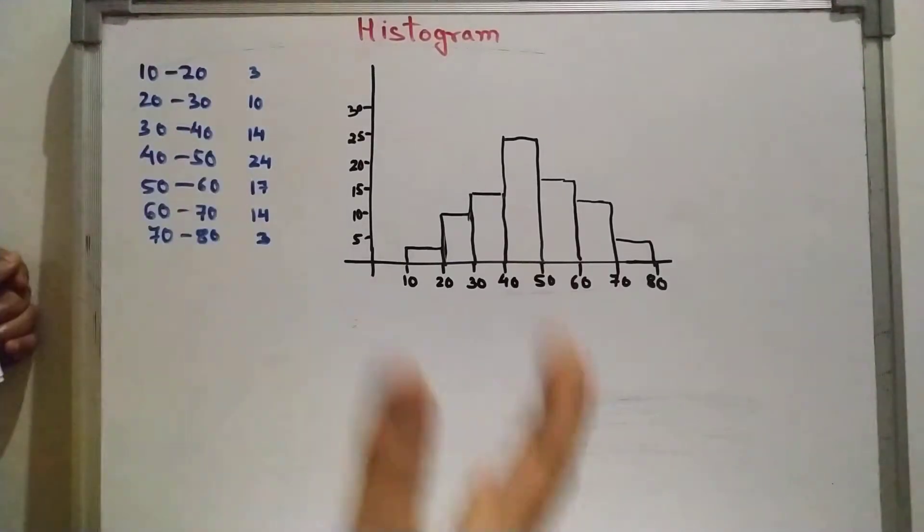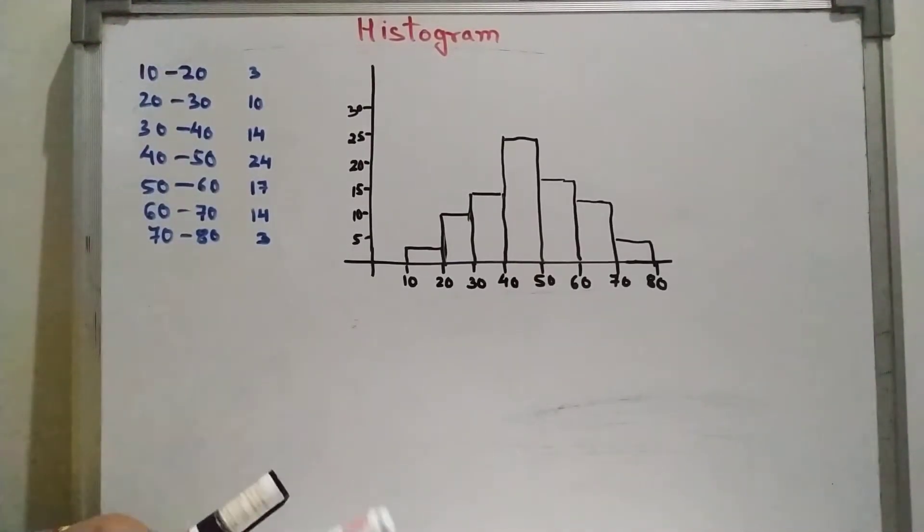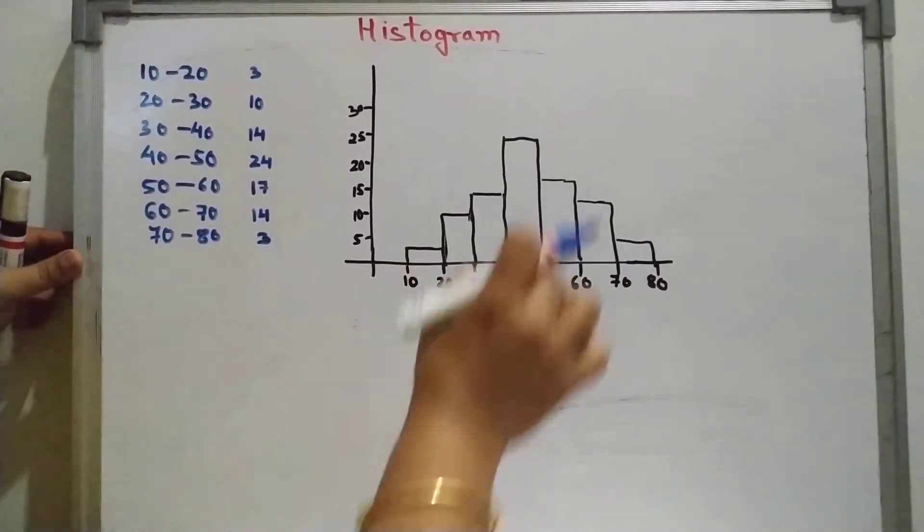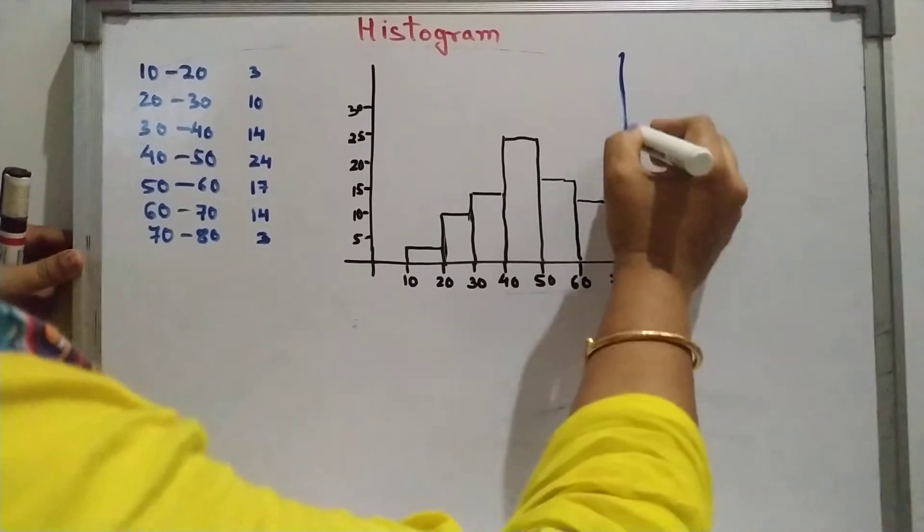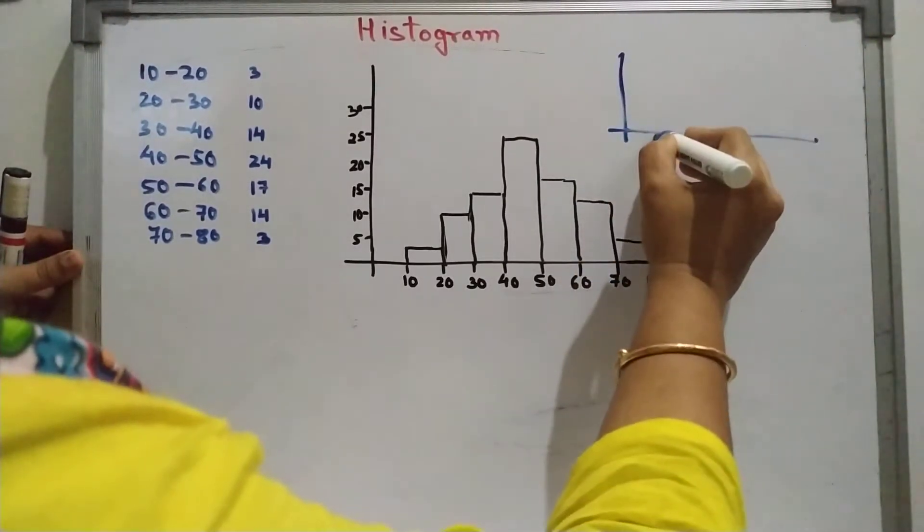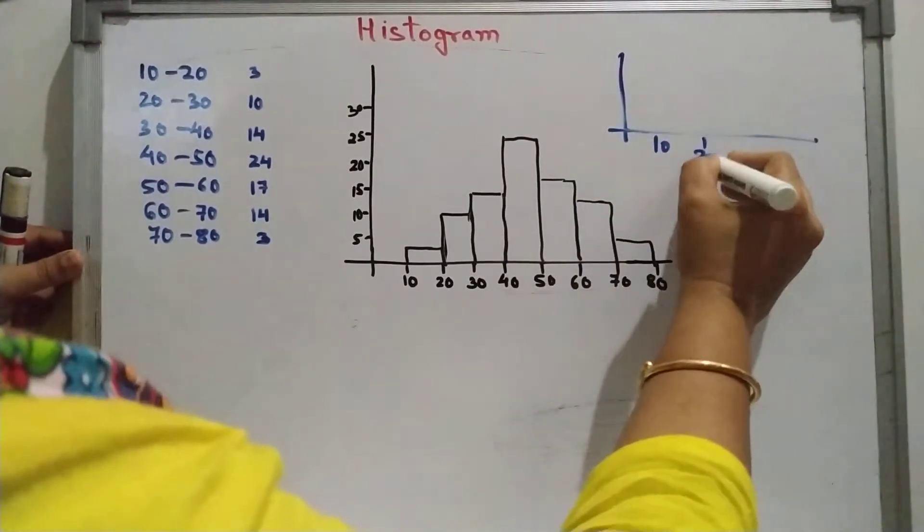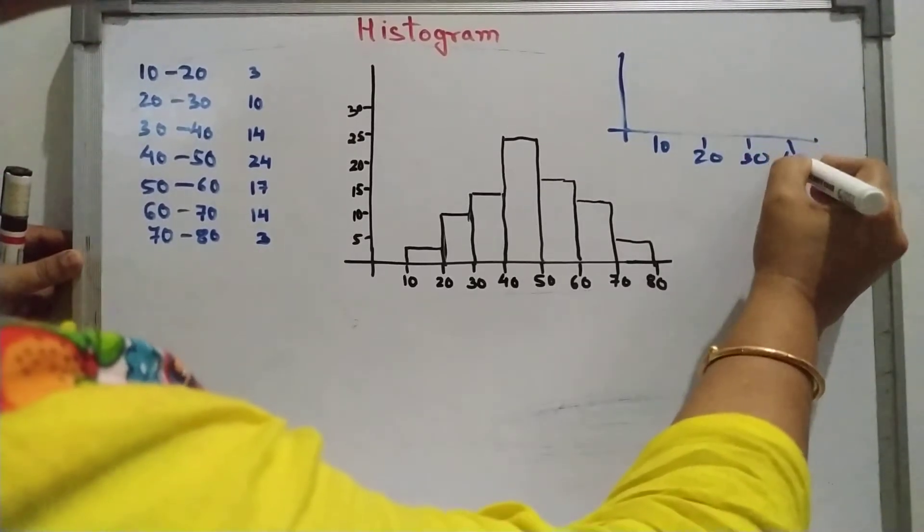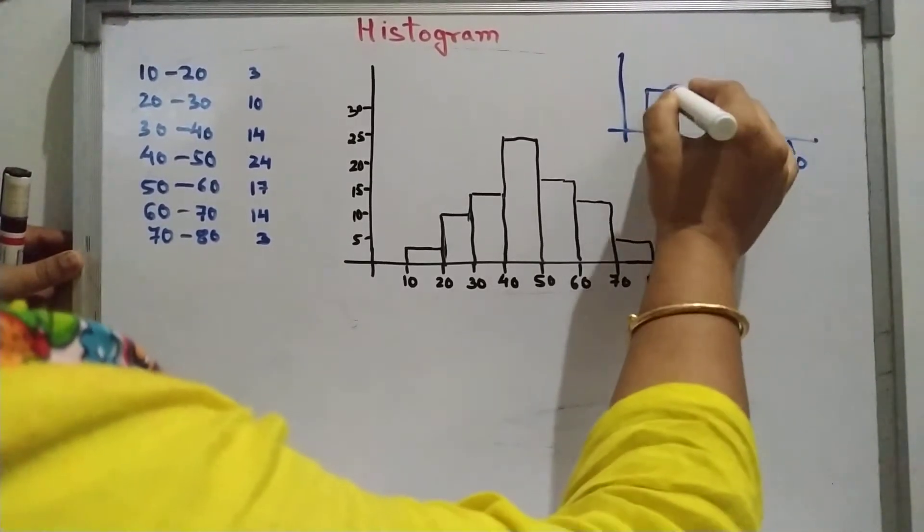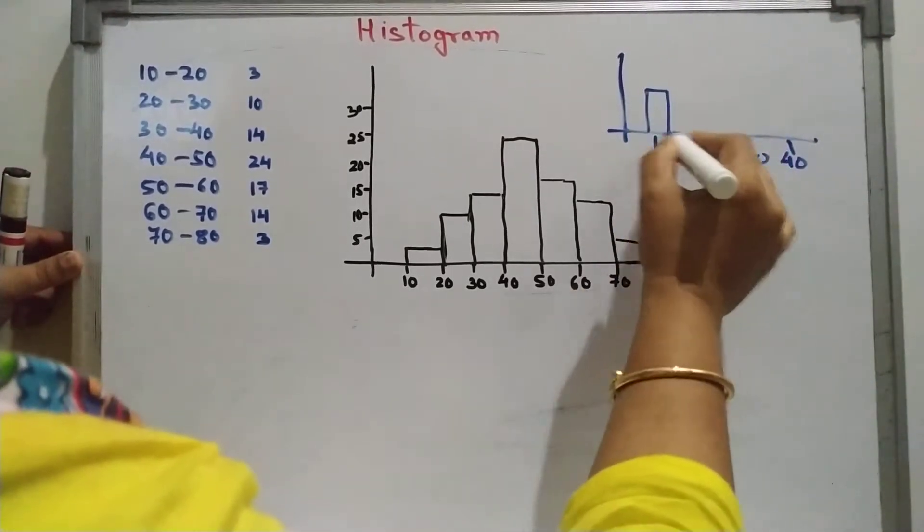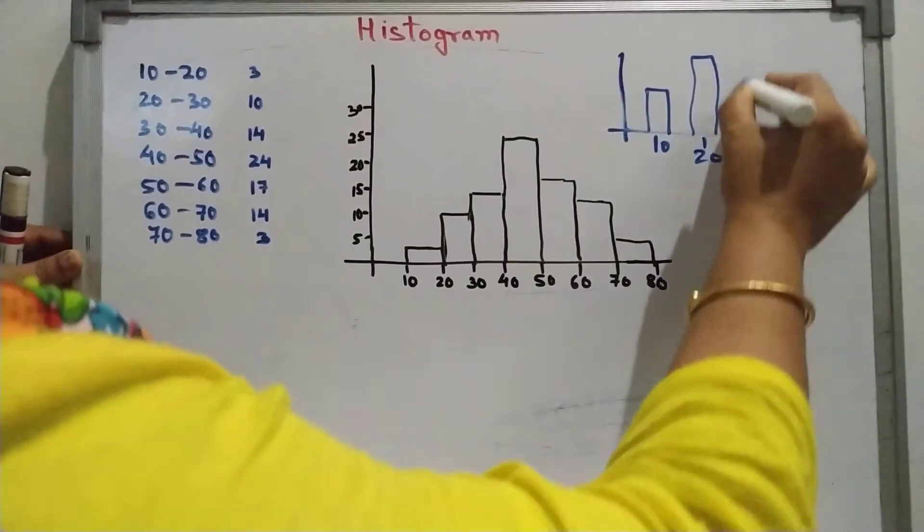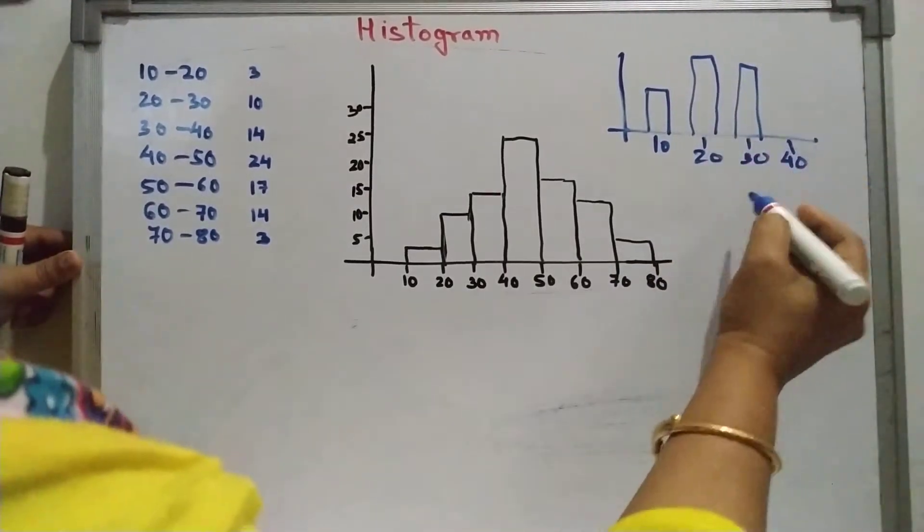What is the difference between the bar diagram and a histogram is that there we get gaps. When we plot, suppose the figure is 10, 20, 30, 40, in bar diagram there is a gap like this. For 10 the height of the bar is this much. For 20 it is this much. For 30 it is this much like this.